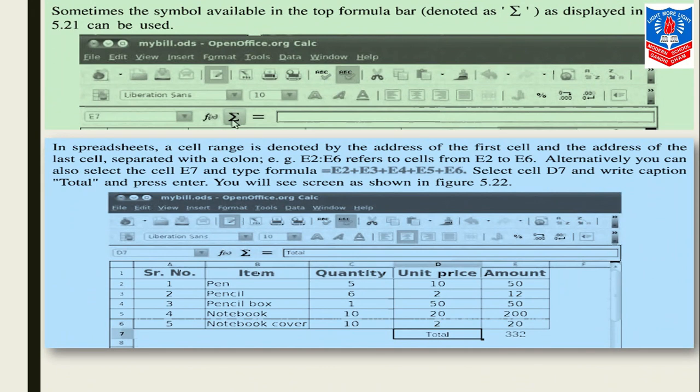Sometimes a symbol available in the top formula bar, this is another option - this is AutoSum. This symbol is displayed in the formula bar. If we select our amount cells and click on this, it will display the output. But here in spreadsheet, a cell range is denoted by the address of the first cell and the address of the last cell separated with a colon. Example: E2 colon E6 refers to the cells from E2 to E6. Alternatively, you can also select E7 and type the formula like E2 plus E3 plus E4 plus and so on. So select cell D7 and write the caption 'Total' in D7, and here we will have our grand total calculated.